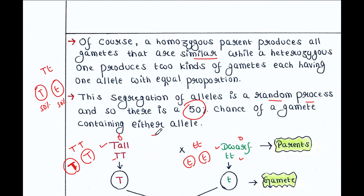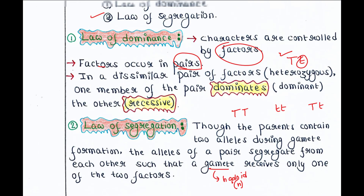That's why Mendel called it the law of segregation — he was talking about the segregation or separation of alleles in gametes during meiosis. So this is all about today's lecture. I hope you liked the lecture. If you want to get the PDF notes of this topic, please check the first pinned comment or the description box. Thank you.